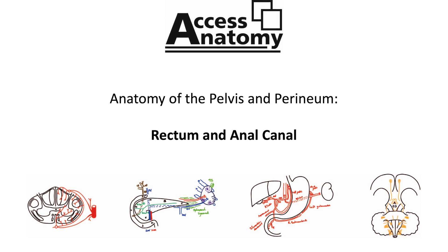As the rectum descends from the recto-sigmoid to the anorectal junction, it can be divided into three portions: the upper, middle, and lower thirds. Each of these portions has a different peritoneal covering. The upper third is covered by peritoneum on its anterior and lateral sides. The middle third is covered by peritoneum only on its anterior surface, and the lower third is considered sub-peritoneal with no peritoneum covering this part of the rectum.